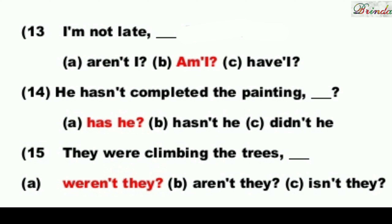Next: He hasn't completed the painting. 'Has not' is present, so the positive tag uses 'has'. Options: has he, hasn't he, didn't he. The answer is: has he. He hasn't completed the painting, has he?